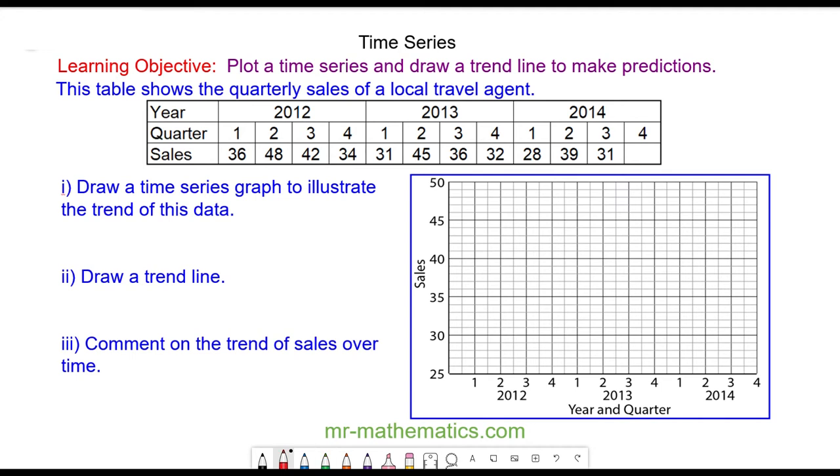So to begin with we plot the sales value of 36 in the first quarter of 2012, the sales value of 48 in the second quarter, the sales value of 42 in the third quarter, and the sales value of 34 in the final quarter. And I'll quickly plot the remaining points.